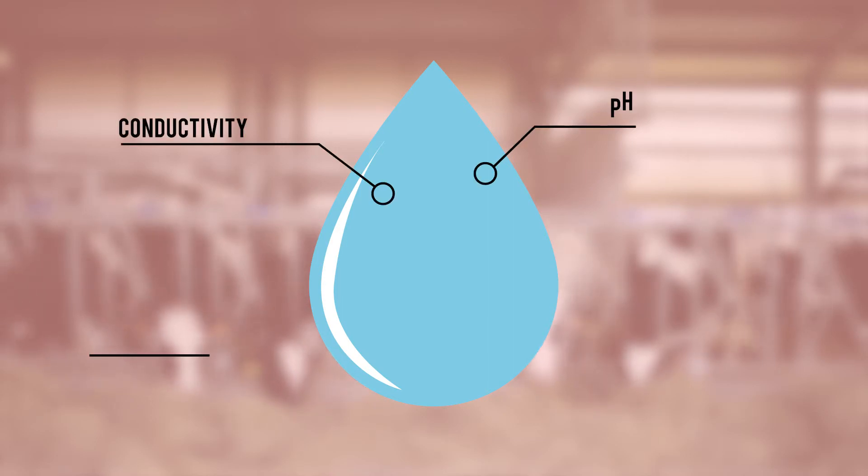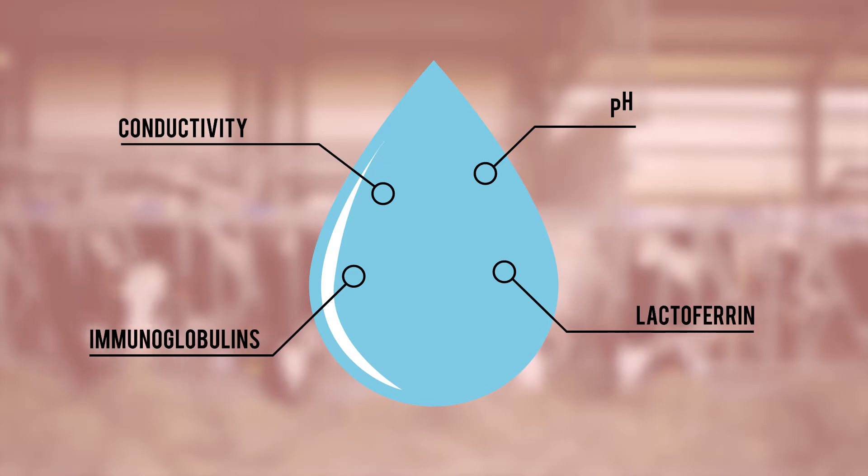When you are affected by mastitis the physiological composition of your milk is changing, in particular the pH, the conductivity and the levels of immunoglobulin and lactoferrin.